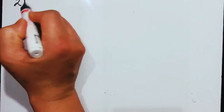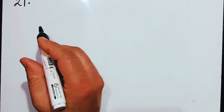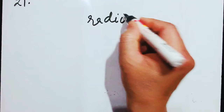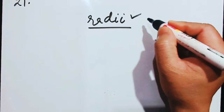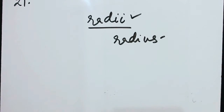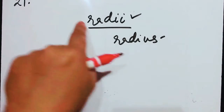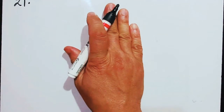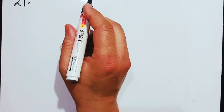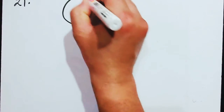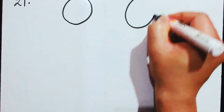Number 21 says: the radii — 'radii' is the plural of radius — of two circles are in the ratio 3 to 5. Consider two circles: one and the other. Let the radius of the first be R1 and the second be R2.